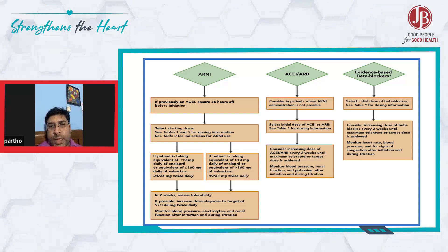For beta blockers, similarly we should start at a lower dose and titrate the dose every two weeks until we achieve maximum dose, monitoring heart rate, blood pressure, and signs of decompensation. Sometimes beta blockers may precipitate decompensation of heart failure.